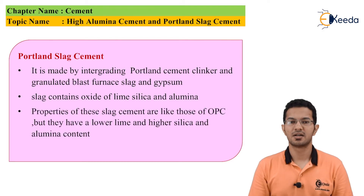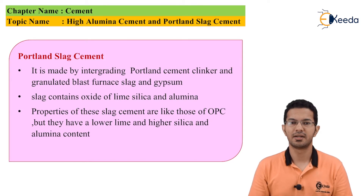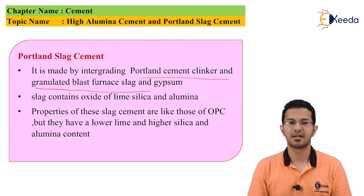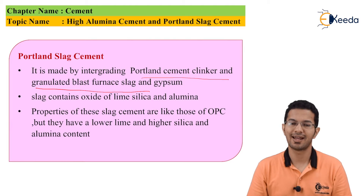Now let's discuss about Portland slag cement. As the name suggests, it uses slag generated from the blast furnace, so it is environment friendly. It is made by inter-grinding Portland cement clinker, granulated blast furnace slag, and gypsum. The slag contains oxides of lime, silica, and alumina. The properties of this slag cement are like those of OPC but they have a lower lime and higher silica and alumina content.